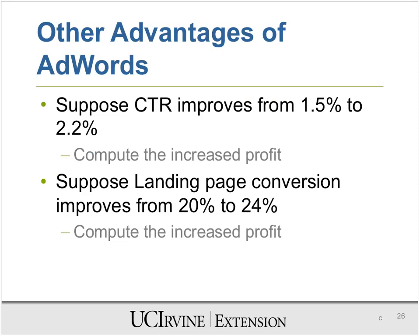Suppose your CTR improves from 1.5% to 2.2% — you can compute your increased profit. Or if your landing page conversion goes from 20% to 24%, you can immediately compute that. You can build a simple model, run the numbers, and determine whether these ads are making any sense. This is the major advantage of Google AdWords.